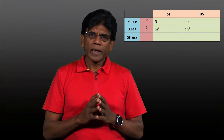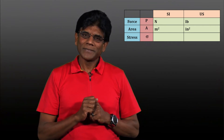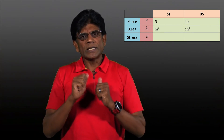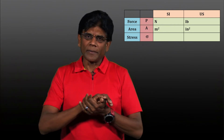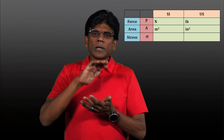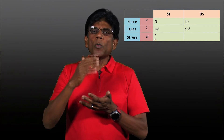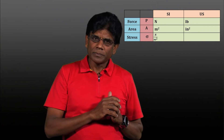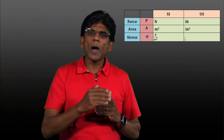Let's denote the force with the letter P, area with the letter A, and stress with the Greek letter sigma. Sigma stands for normal stress and is equal to force over area. So the unit for stress is Newton over meters squared in the SI system, and pound over inch squared in the US system.